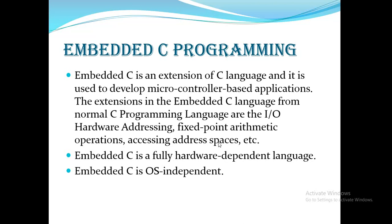Embedded C is somewhat related to hardware. While regular C is related to software, embedded C is directly linked to hardware. It is used to code hardware devices — for example, we can program a microcontroller using embedded C and attain the desired functionality.